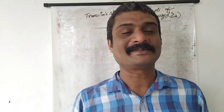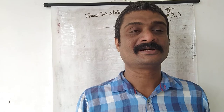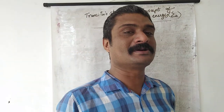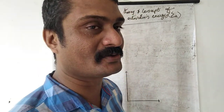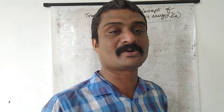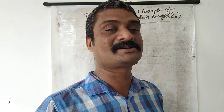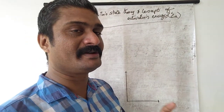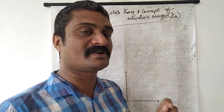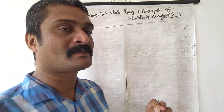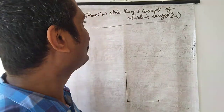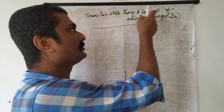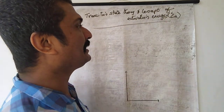In my last video, we discussed the effect of temperature on reaction rate on the basis of collision theory. In this video, I am going to discuss the effect of temperature on reaction rate on the basis of transition state theory. We already know the concept of threshold energy is introduced by collision theory, and the transition state theory uses a new concept: activation energy.